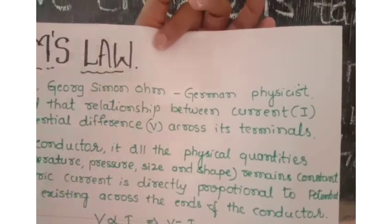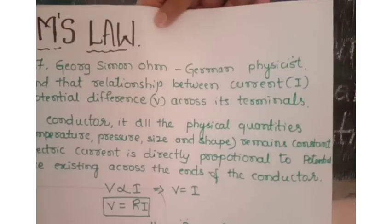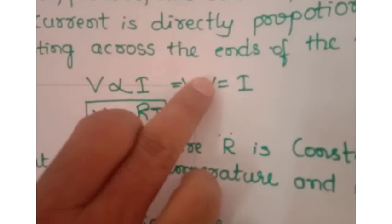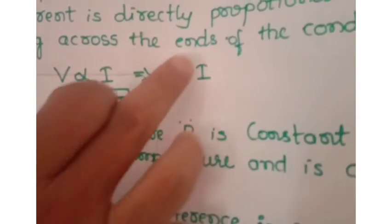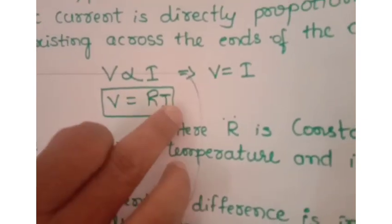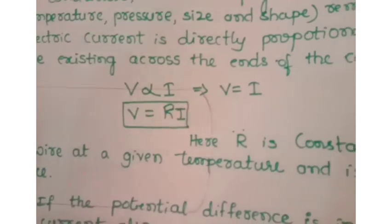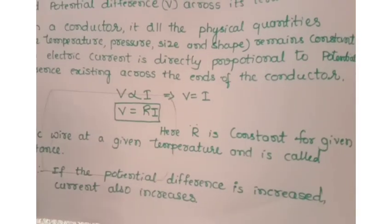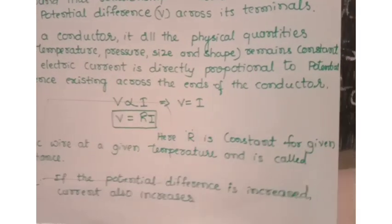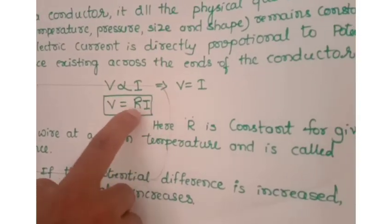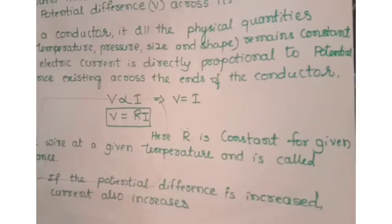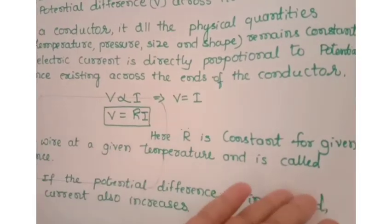In a conductor, if all physical quantities remain constant, the electric current flowing through the conductor is directly proportional to the potential difference across its ends. So: V ∝ I, which gives V = IR. Here R is the constant of proportionality for a given metallic wire at a given temperature and is called the resistance of the conductor.